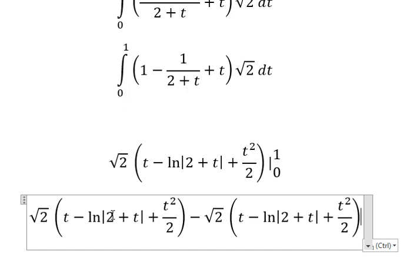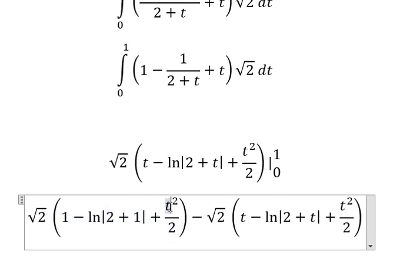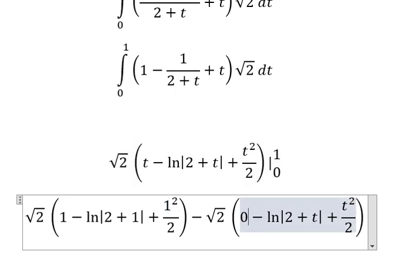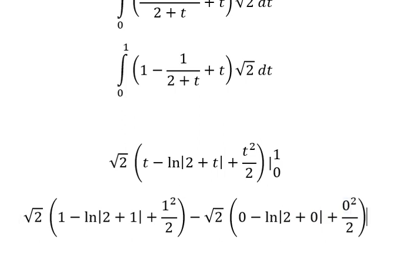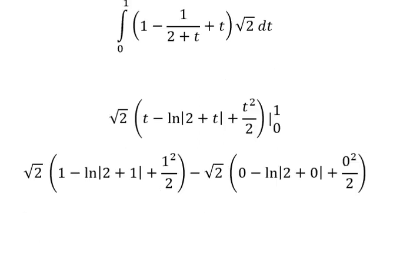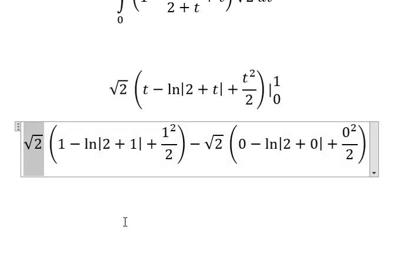So I will put t equals one in here, and t equals one in here, then t equals zero and t equals zero. We simplify everything and we have the result.